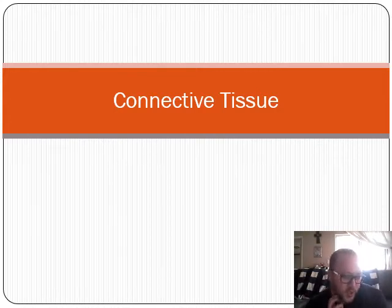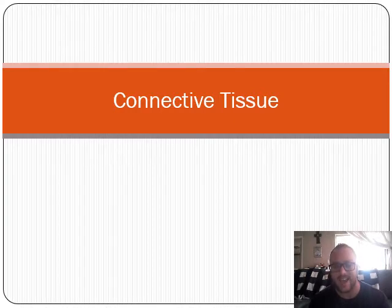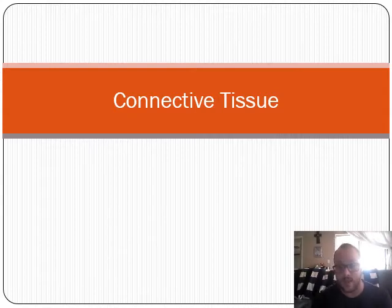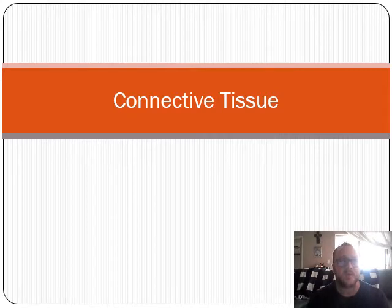So now we're going to start connective tissue. Connective tissue literally does what it says in its name - it connects different parts of the body together. It can connect two organs together, either physically or via a liquid. There are different types of connective tissue: the liquid ones, the semi-solid ones, and the solid ones.